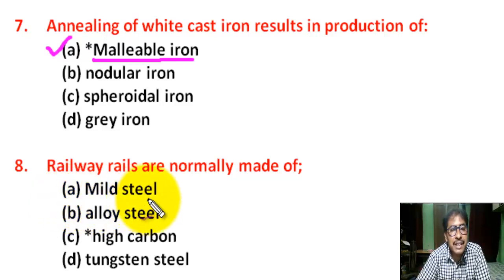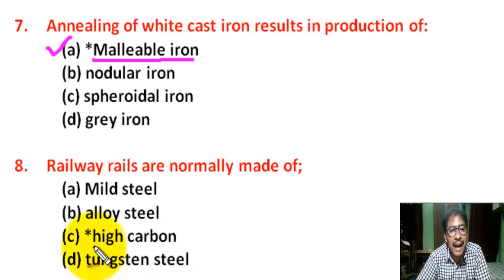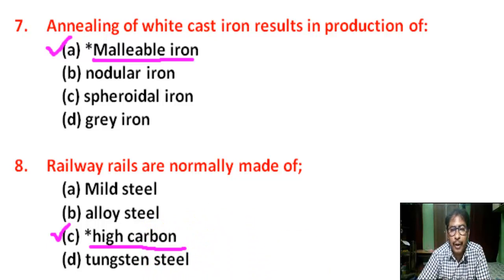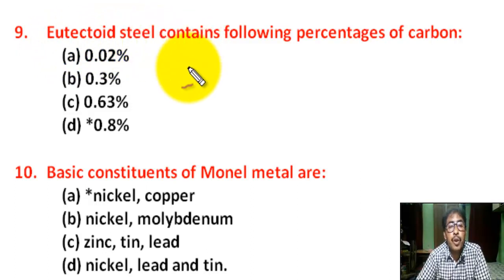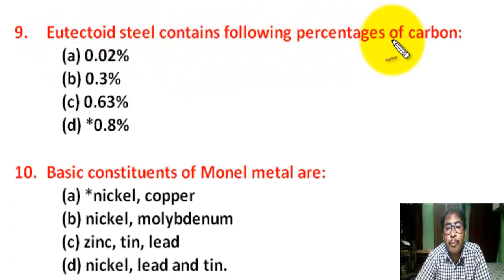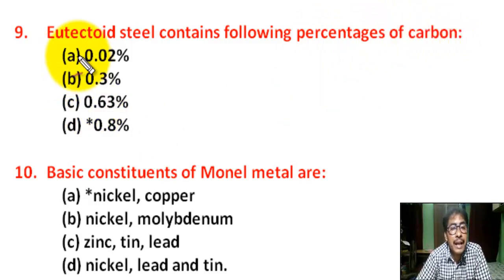Question number eight: railway rails are normally made of — A) mild steel, B) alloy steel, C) high carbon steel, D) tungsten steel — correct answer is C — high carbon steel.